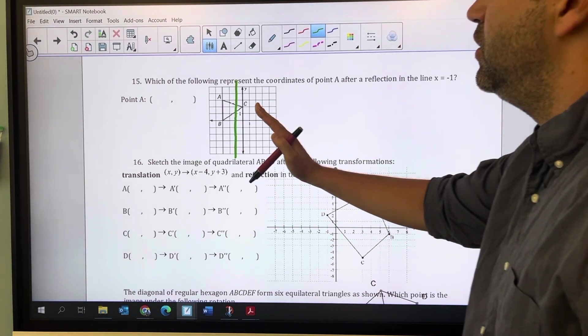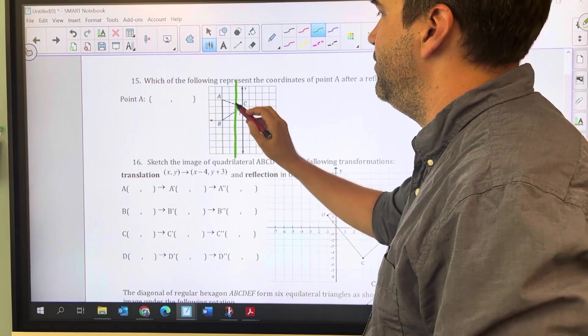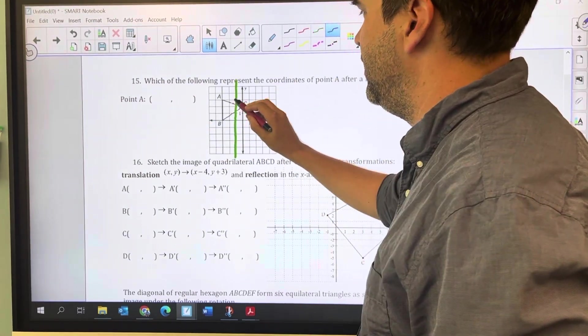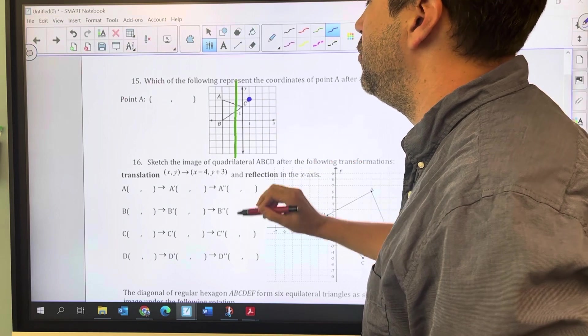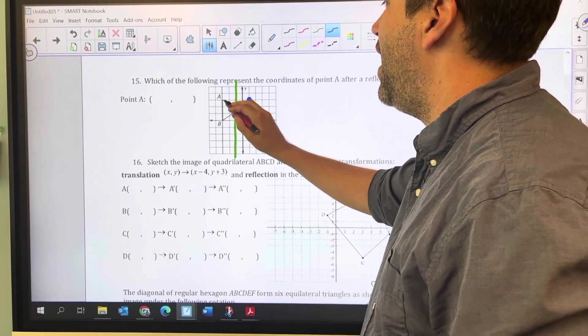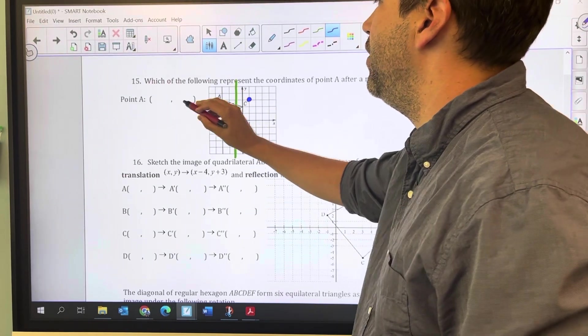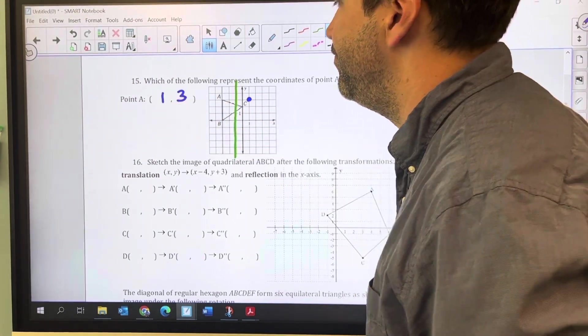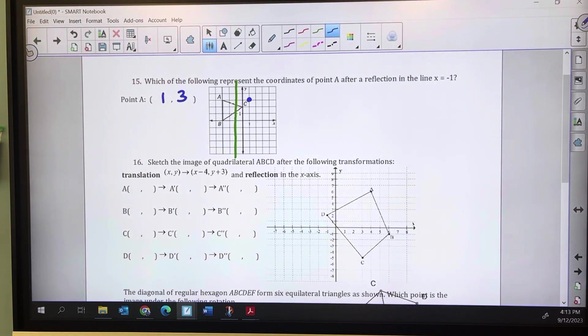Point A started 2 units to the left of that line, so when I reflect it, it's going to end up 2 to the right. The y is going to stay the same at 3, and the x is going to change to 1, so we end up at (1,3).